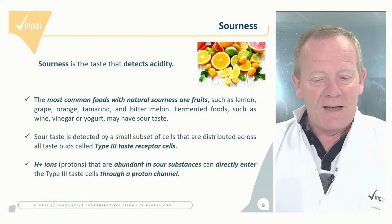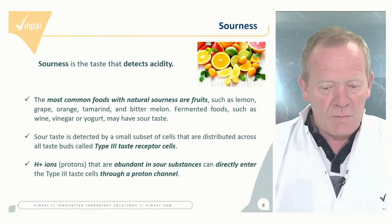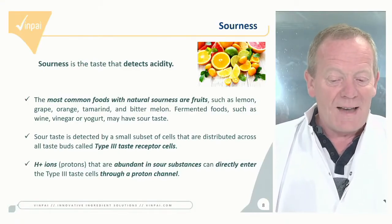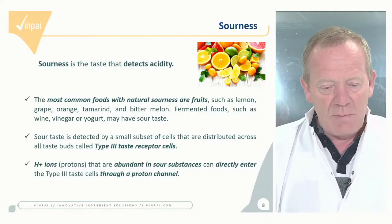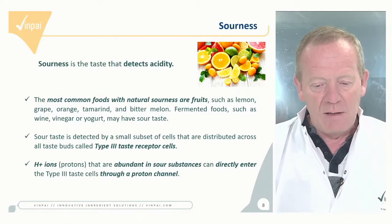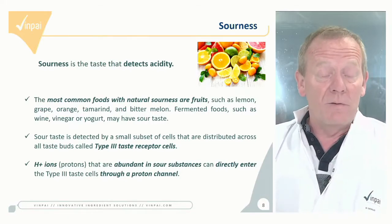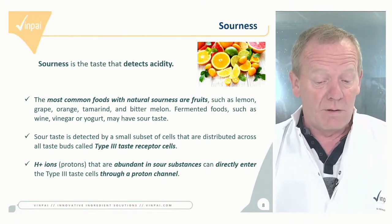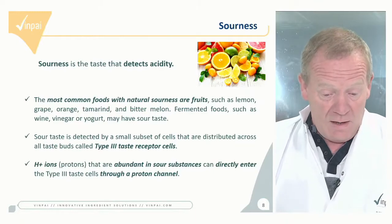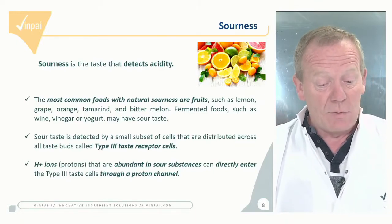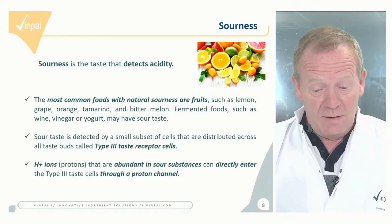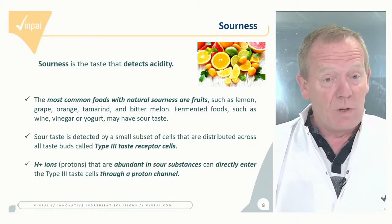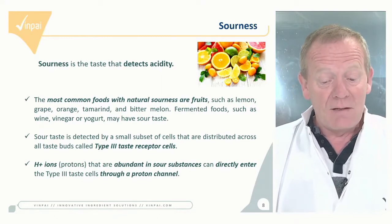Sourness is a taste that detects acidity. The most common foods with natural sourness are citrus fruits such as lemon, orange, tamarind, and bitter lemon, but also some fermented foods such as wine, vinegar, or yogurt. Sour taste is detected by a specific small subset of cells in the taste buds called the type 3 taste receptor cells.